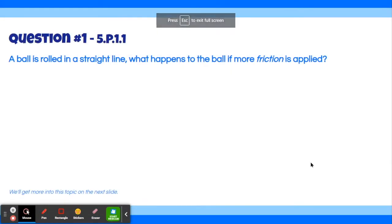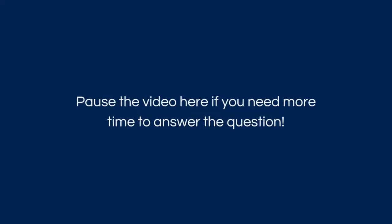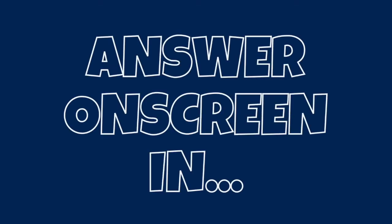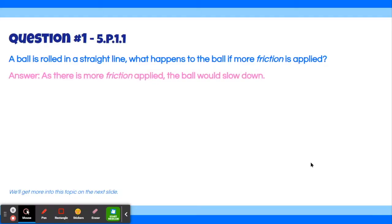Alright, let's get started with the first question. If a ball is rolled in a straight line, what happens to the ball if more friction is applied? Well, the answer is that as there is more friction applied, the ball will slow down.